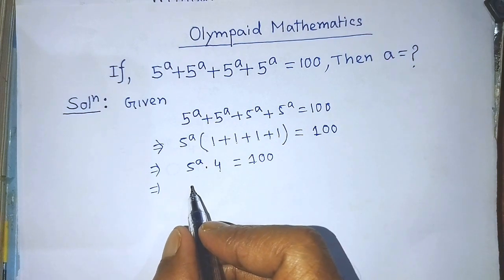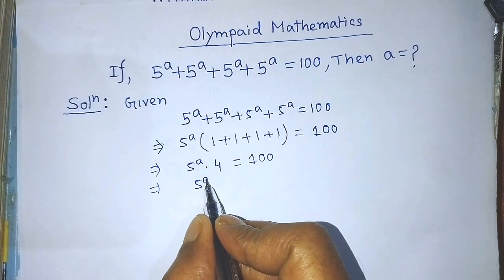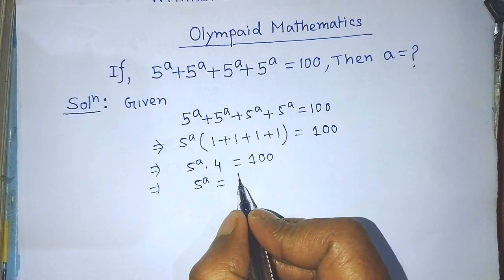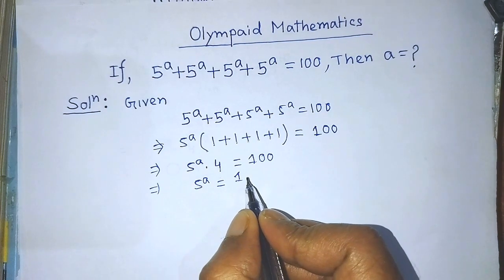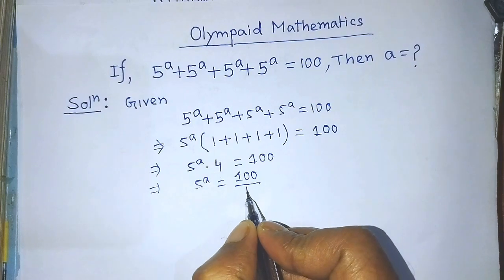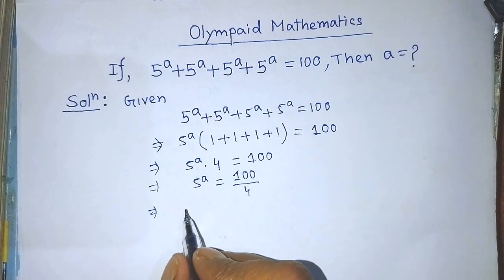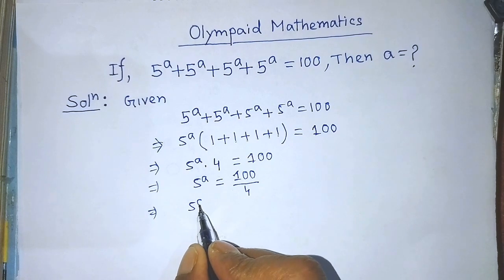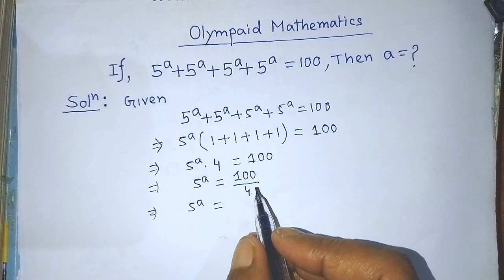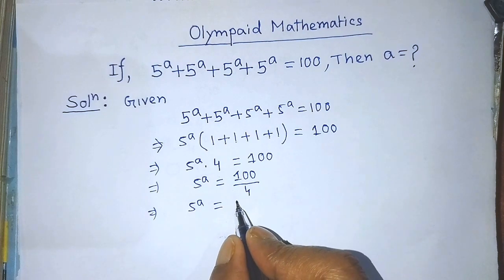So on the left hand side, we have to write 5 to the power A is equal to, on the right hand side, 100 over 4. After that, on the left hand side again we have 5 to the power A is equal to — if you divide 100 by 4, then you get 25.